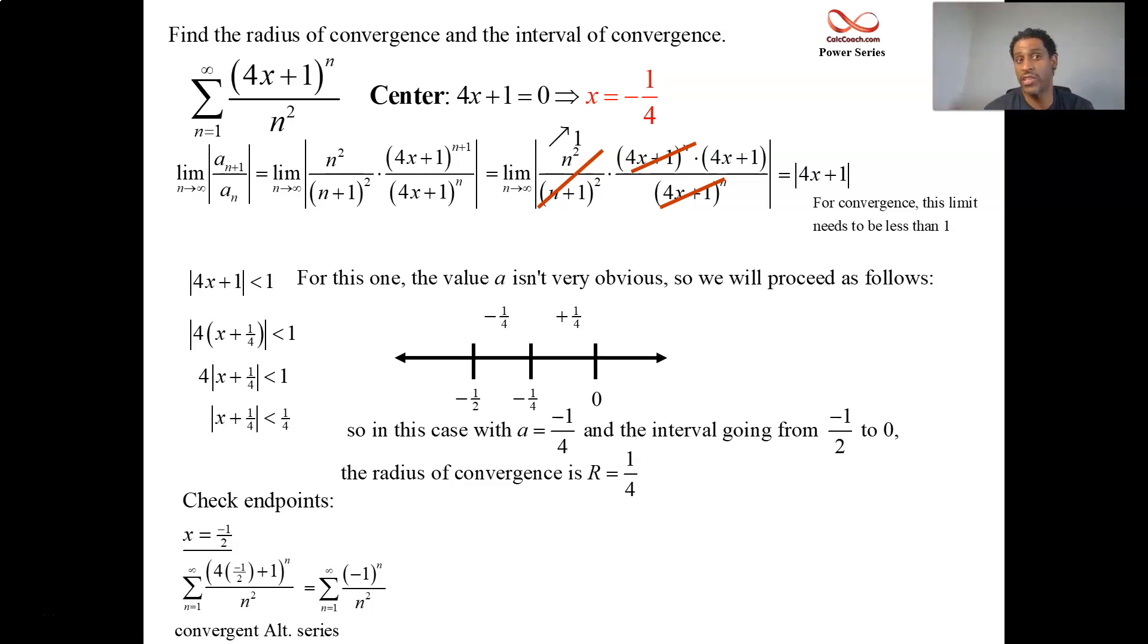What about when x equals 0? Then you're looking at just 1. It's raised to integer value, so it's always going to be a 1. This is 1 over n squared. That's a p series. That's convergent as well.